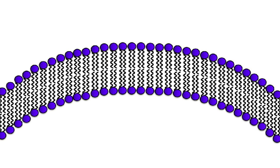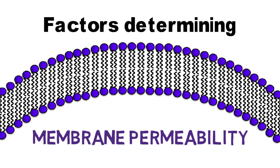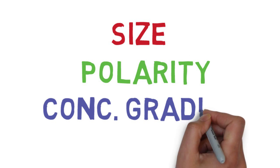In the previous video, three key factors that determine the ease of membrane permeability of any given molecule were covered. They are size, polarity, and concentration gradient.